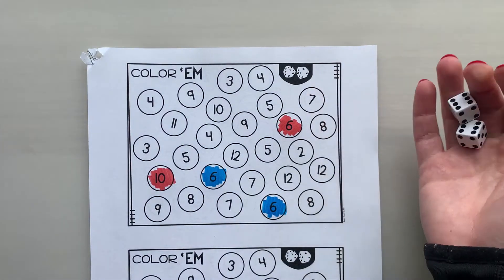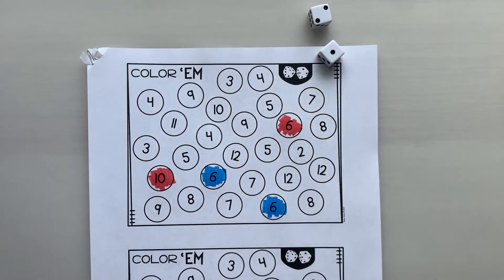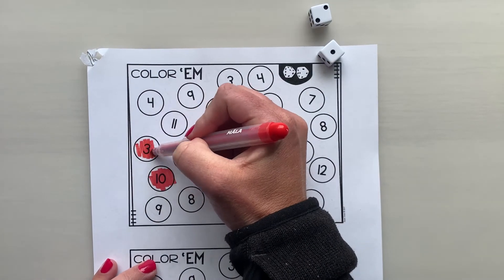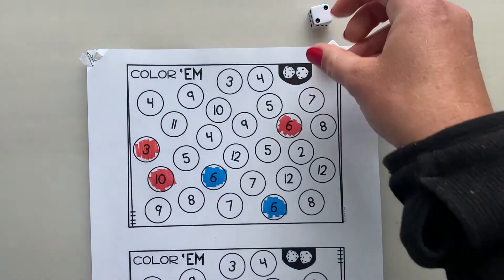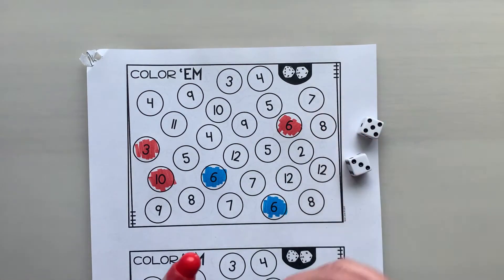And then player one. One plus two is three. Color in three. And then you just keep going taking turns until the board is all filled in.